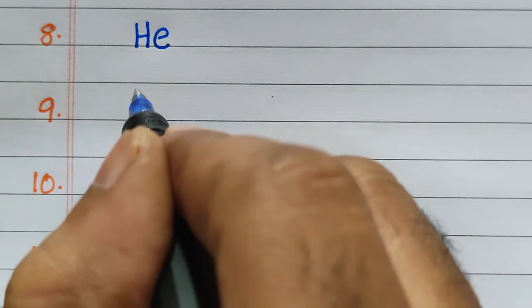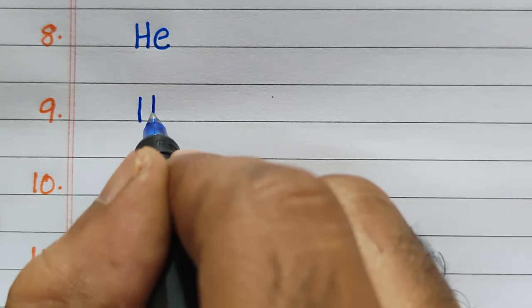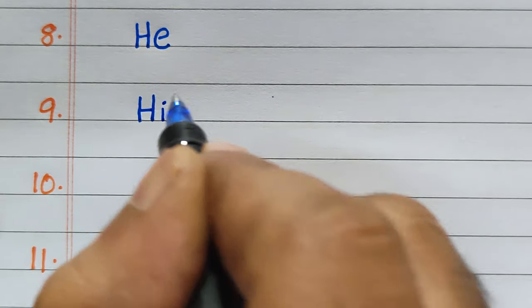The eighth two-letter word is HE. The ninth two-letter word is HI.